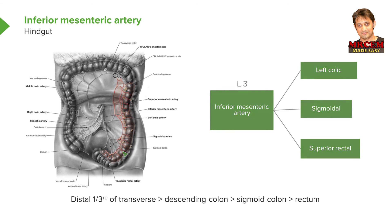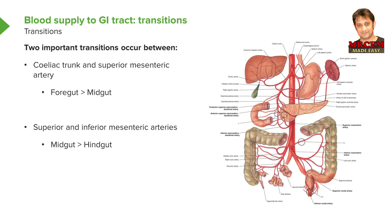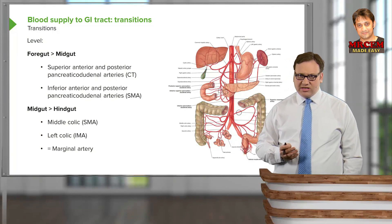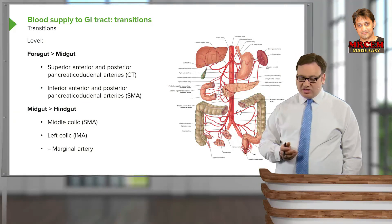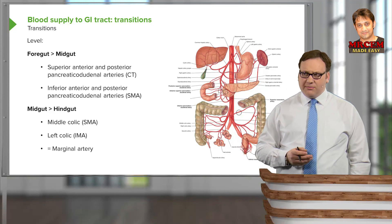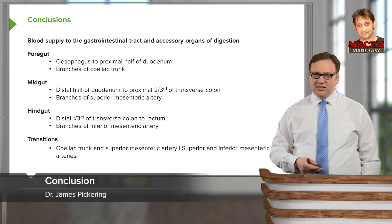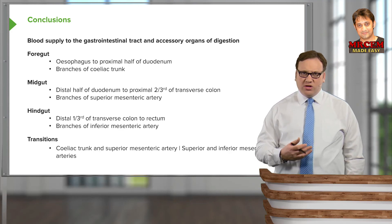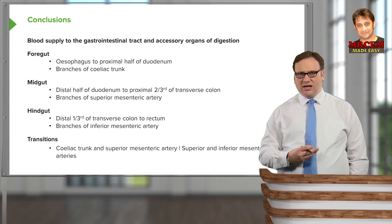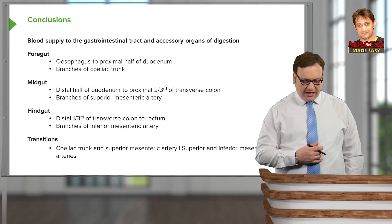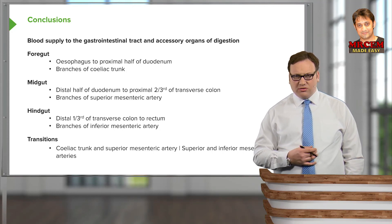These two important transitions — between foregut and midgut via the superior and inferior pancreaticoduodenal arteries, and between midgut and hindgut via the middle colic and left colic forming the marginal artery — are really important in maintaining sufficient blood supply to the GI tract. In conclusion, we've looked at the blood supply to the GI tract and the accessory organs of digestion, focusing on the foregut, midgut, and hindgut and the branches of their respective arteries, as well as those important transitional anastomoses.